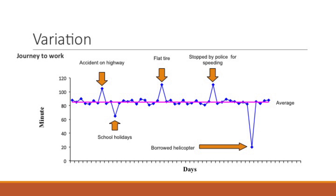Let's use a simple example. Let's say that I want to understand how long it takes me to get to work every day. So I put together this chart shown here, and it shows my journey to work and the minutes it takes me to get there. I'm looking at my data over time on consecutive days. Each day the time varies just a little bit, but it's really around about 85 or 90 minutes to get to work every day. Except on some days it might take longer because perhaps there's an accident on the highway, or some days it may not take as long because it could be school holidays and there aren't as many cars on the road. Or perhaps I have a flat tire, or I could be stopped by police for speeding. Or let's say I really wanted to improve the process and I borrow a helicopter and my time to get to work would only be a few minutes.